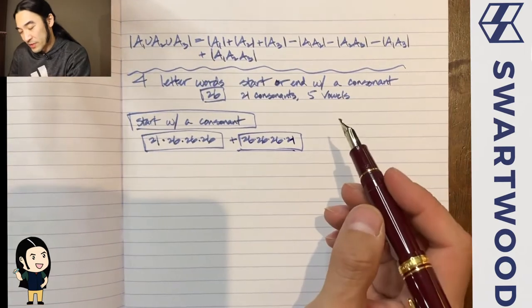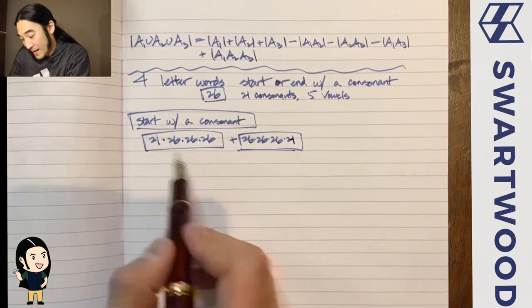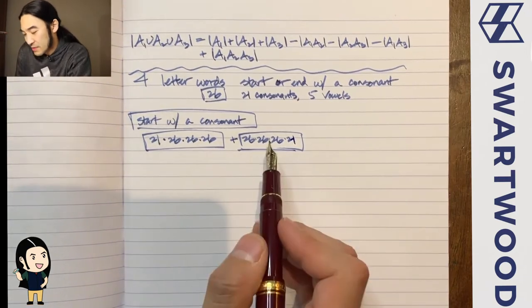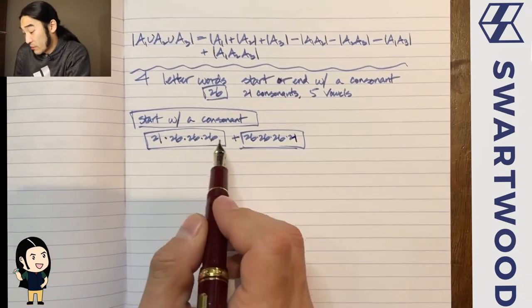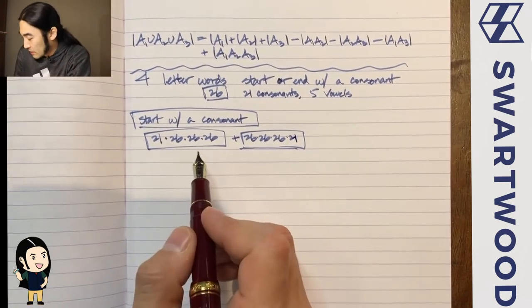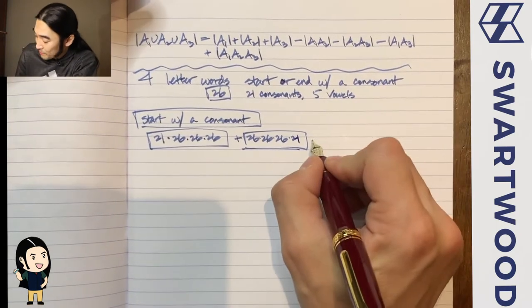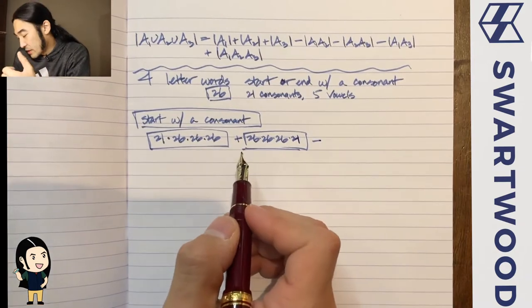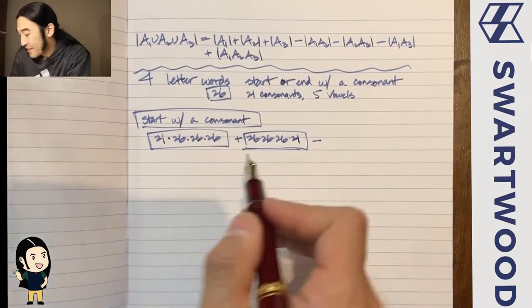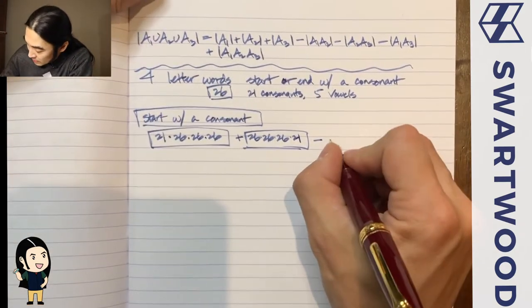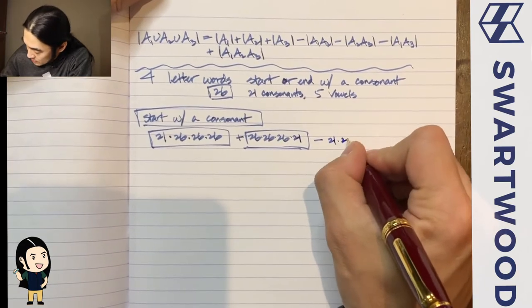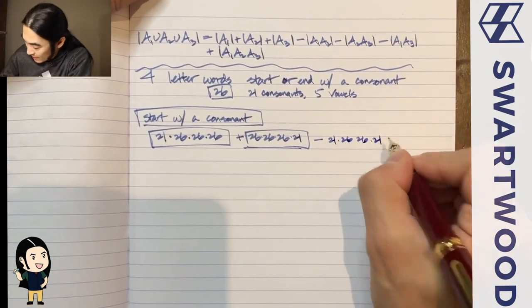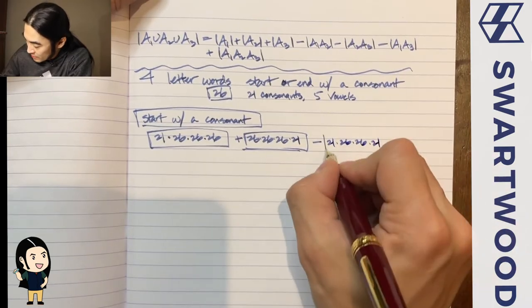This is almost perfect, but the problem is we've overcounted. When counting words starting with a consonant, the last letter could also happen to be a consonant. To fix that, we subtract the overcount: 21 choices for the first letter, anything for the second and third, and 21 choices for the last — multiply these together.